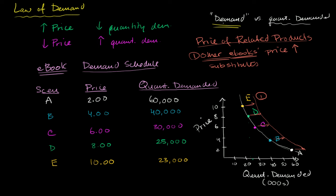So this is actually changing our demand — it's changing our whole relationship, shifting demand to the right. I really want to make sure this point is clear: when we hold everything else equal, we're moving along a given demand curve. We're saying the price-quantity demanded relationship is held constant and we can pick a price and get a certain quantity demanded. If we change one of those things, we might actually shift the curve — we'll change this demand schedule.